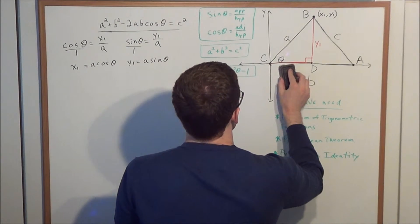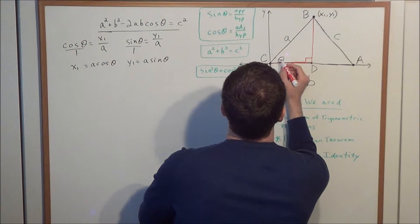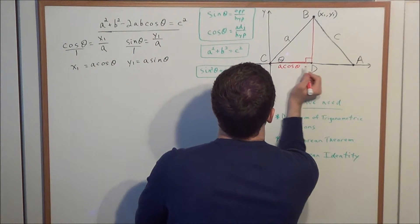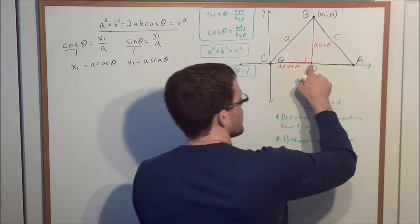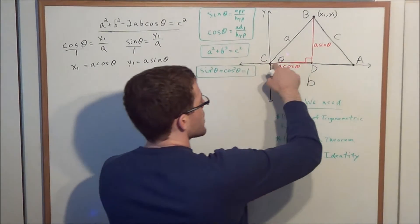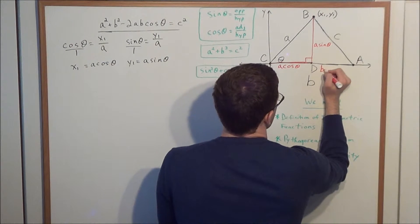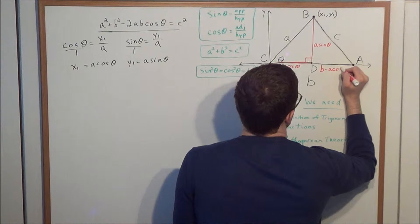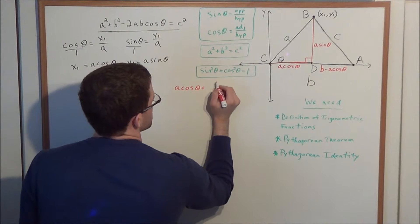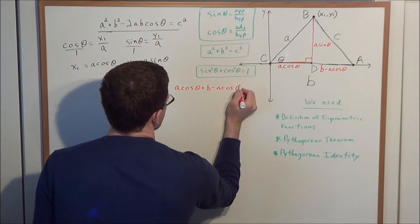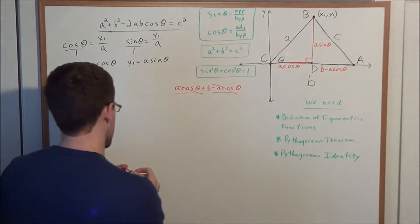We do not want to think of these as x1 and y1 anymore. We want to think of these sides of the right triangle as a cosine theta and a sine theta. Now the next step is to label the missing side, line segment DA. If the entire line segment is lowercase b and this segment here is a cosine theta, then the missing side is b minus a cosine theta. This can be quickly checked: a cosine theta plus b minus a cosine theta gives back side length b.